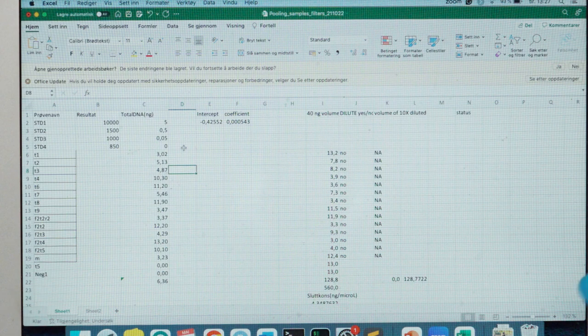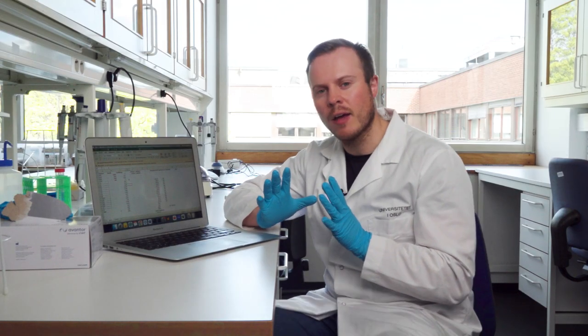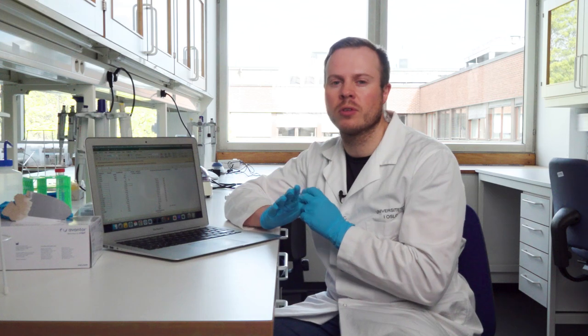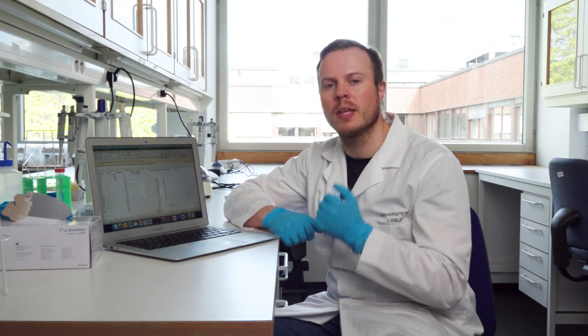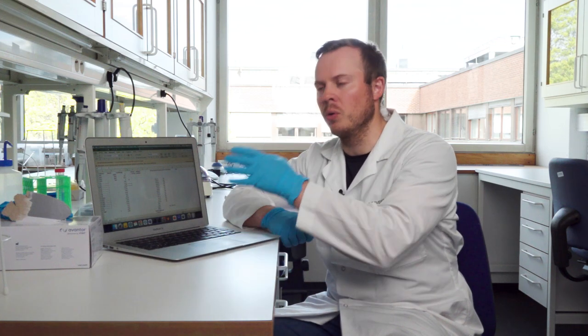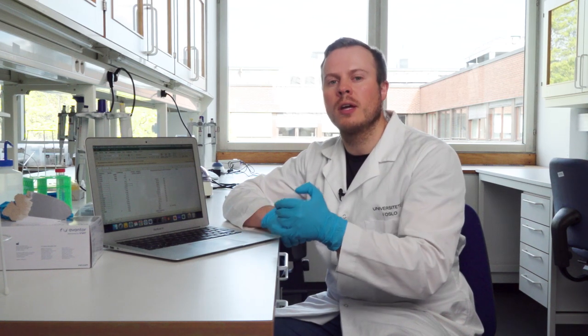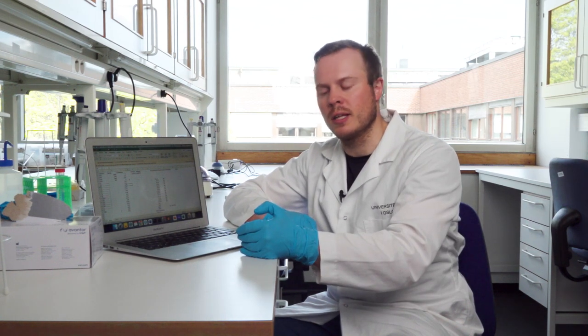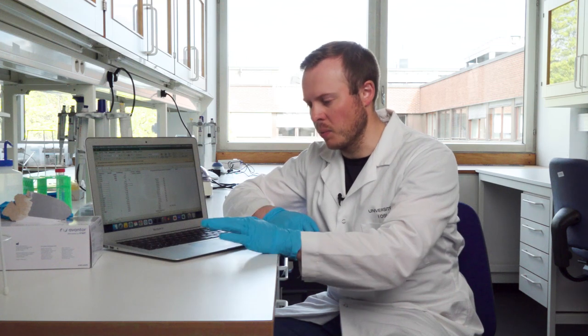But before we get the right values, when we do the PicoGreen, we have four samples that are our standards, which means that they have a given concentration of DNA. We use these and measure the fluorescence to make a standard curve to fit all of our other samples on the standard curve to estimate how much DNA is in our unknown samples.